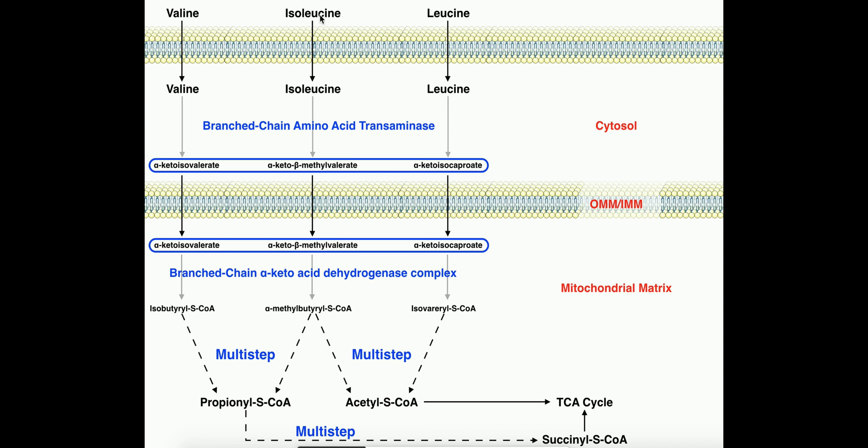Notice isoleucine, on the other hand, is degraded to both of these products overall. So isoleucine will be degraded to both propionyl-CoA and acetyl-CoA. But what you should notice about both of these end products is that they both, either directly or indirectly, enter the TCA cycle.